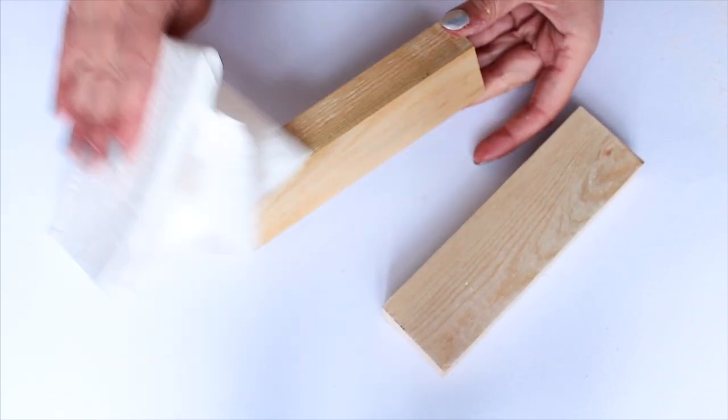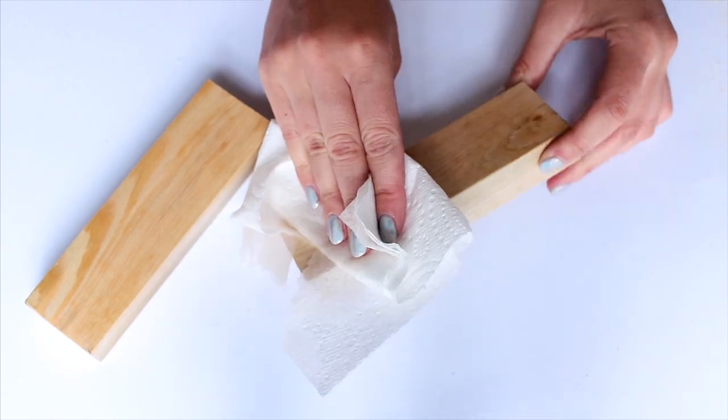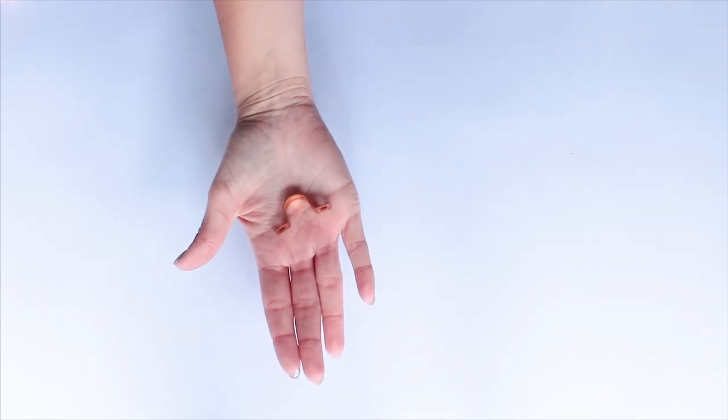Once it was dry I took off all of the masking tape. Next up you'll need some wooden blocks—I'm making two lights so I have two blocks. I polished mine with some Danish oil to bring out the natural texture of the wood underneath, but this is an optional step.